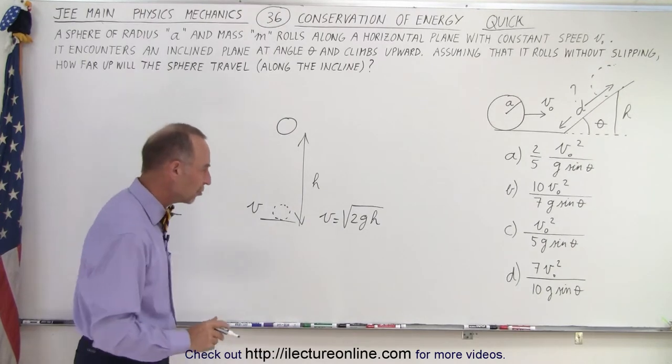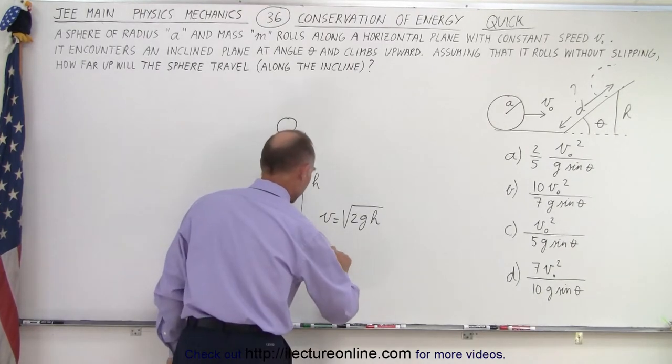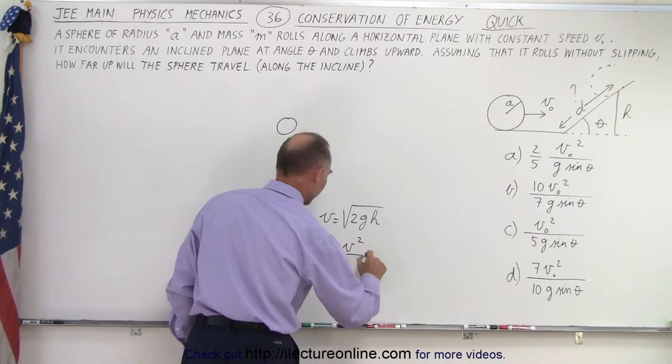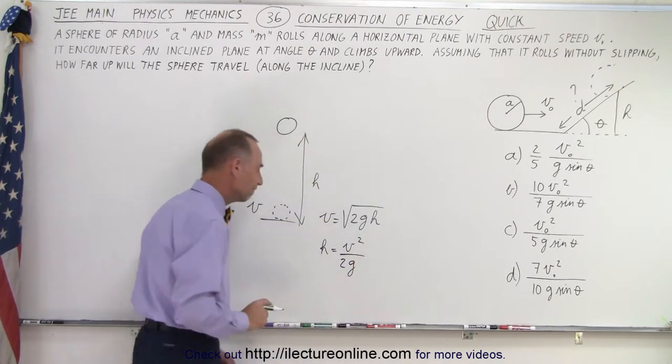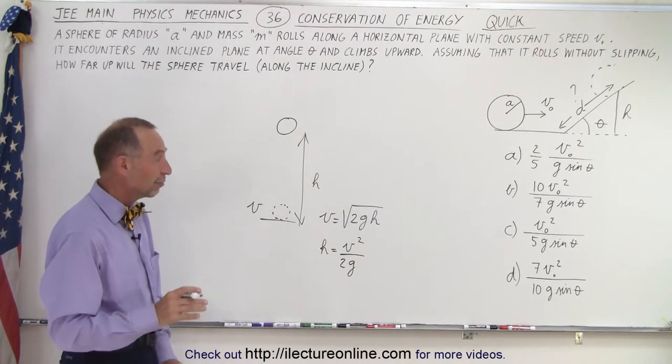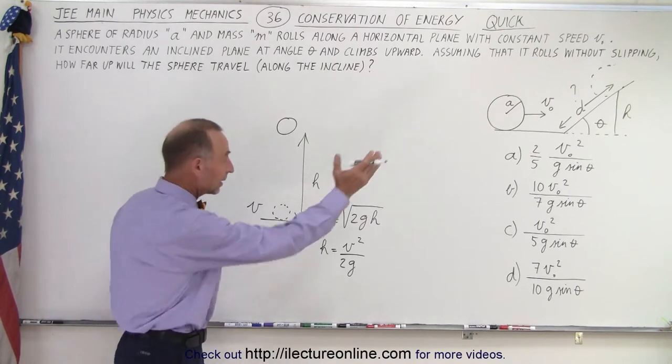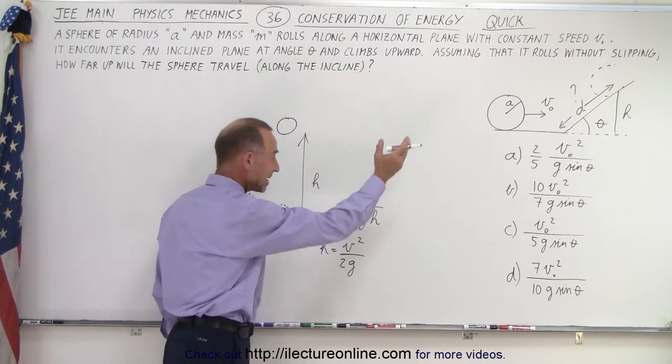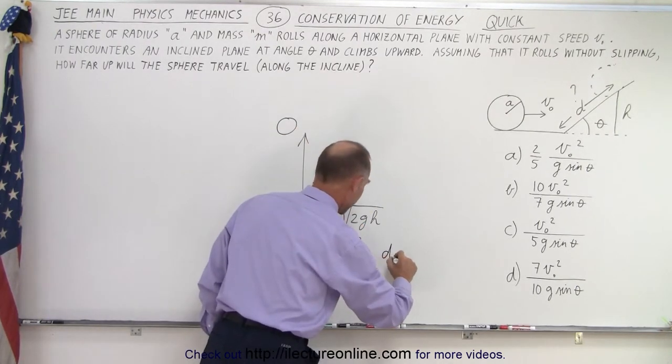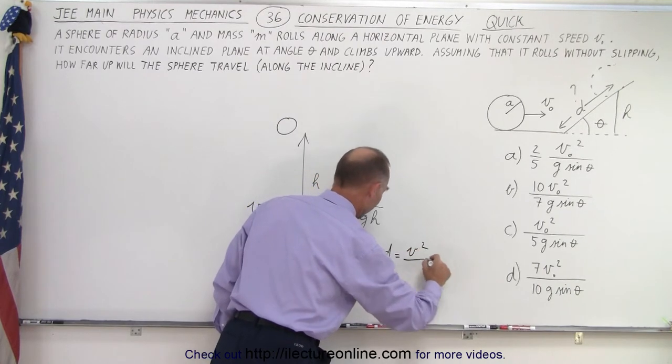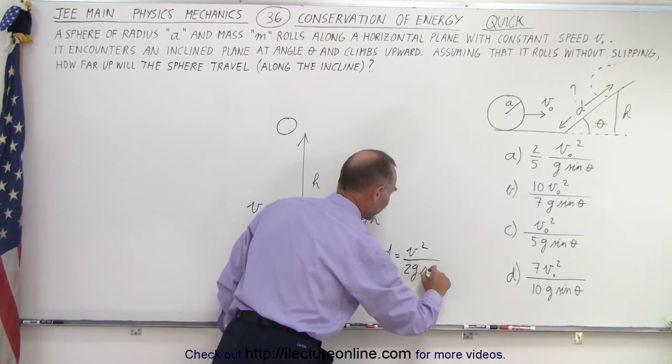After we solve this equation for h, we can then say that h is equal to v squared divided by 2g. Now, if we're dealing with an incline and we want to find d, then we can say that d is equal to v squared divided by 2g times the sine of theta.